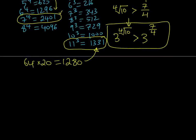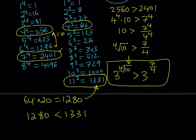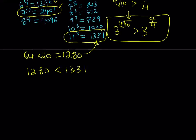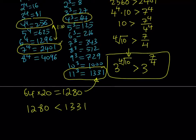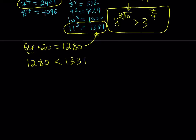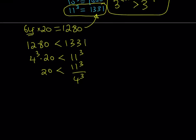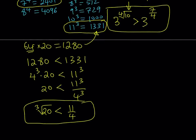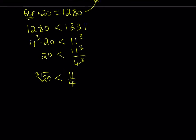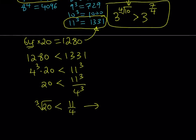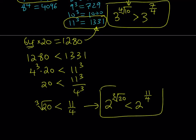We know that 1280 is less than 1331. Writing 1280 as 4 to the 3rd power times 20, we get 4 cubed times 20 is less than 11 cubed. Isolating the 20, we get 20 is less than (11/4) cubed, and taking the cube root of both sides, the cube root of 20 is less than 11/4. Then, raising 2 to the power of both sides: 2 to the power cube root of 20 is less than 2 to the power 11/4. That is the second inequality I need.